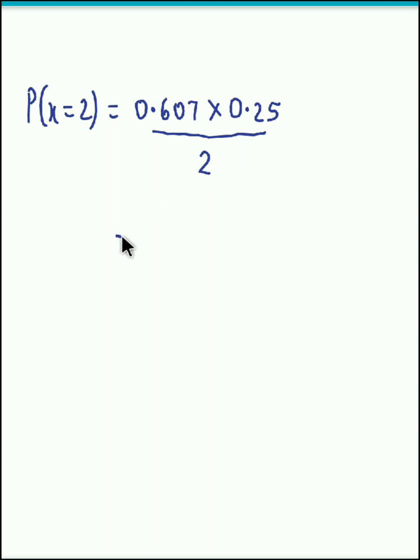Now if we perform the calculation, if we simplify this entire value, we will obtain the value of probability at x equal to 2 as 0.076. So this is the required probability value.